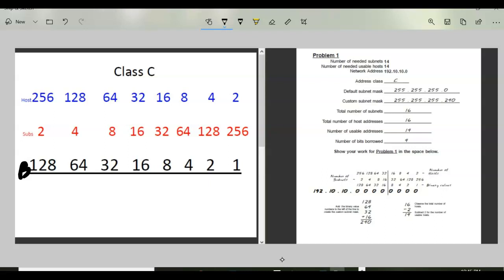Then we need to do the same thing only we double back for the hosts. So we start on the right side with 2, 4, 8, 16, 32, 64, 128, 256. So this chart is something that I use all the time because I'm a visual learner and it helps me to understand visually how things are happening.